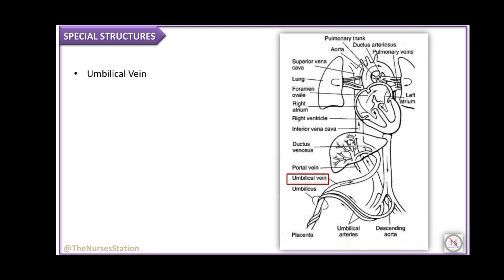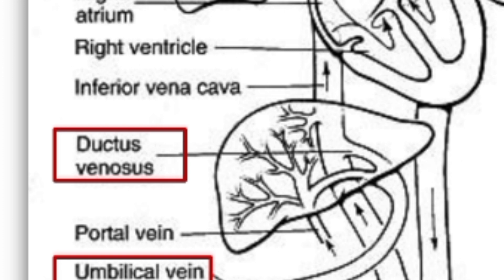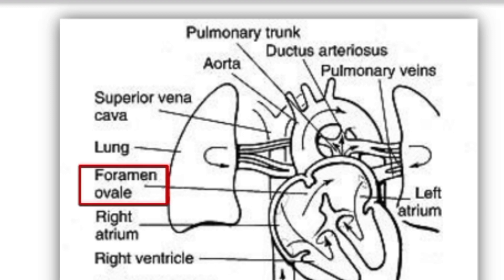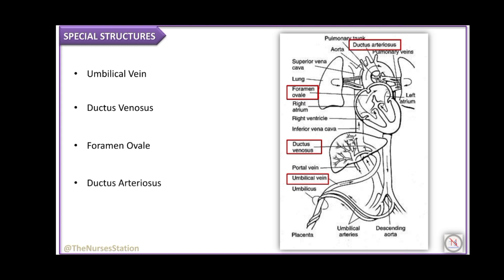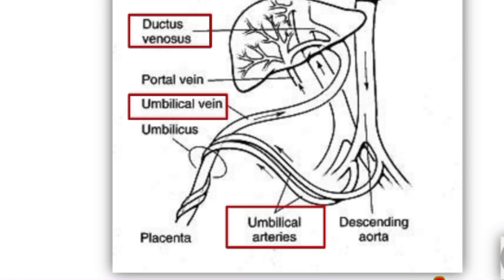The special structures present in fetal circulation include: the umbilical vein, which takes oxygenated blood from the placenta to the fetus; the ductus venosus, a vascular shunt between the umbilical vein and the inferior vena cava; the foramen ovale, an opening in the interatrial septum allowing blood to flow from the right atrium to the left atrium; and the ductus arteriosus, a vascular connection between the pulmonary trunk and the aorta.